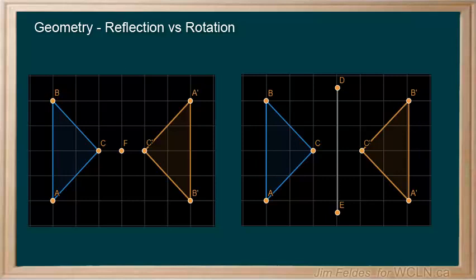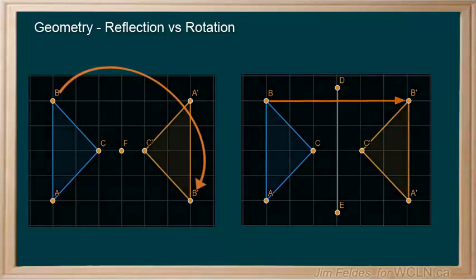But we can see that with the rotated image, the B ends up opposite the point of rotation. And with reflection, the B is opposite the mirror line. Only the letters can help us distinguish what transformation really happened to the shape.